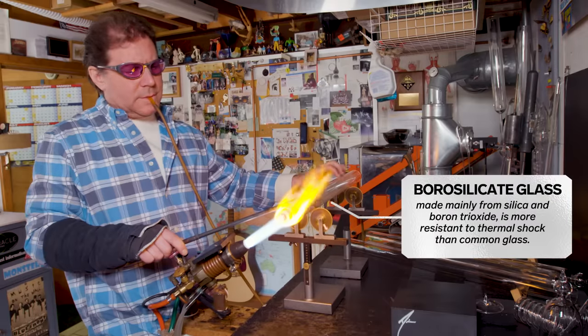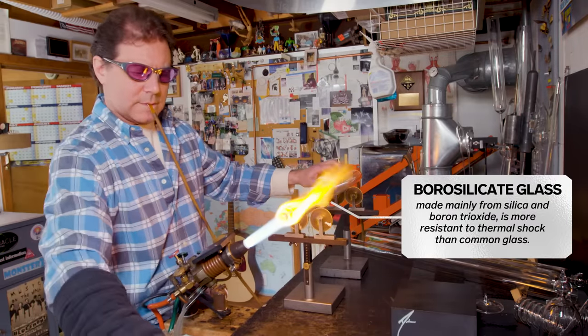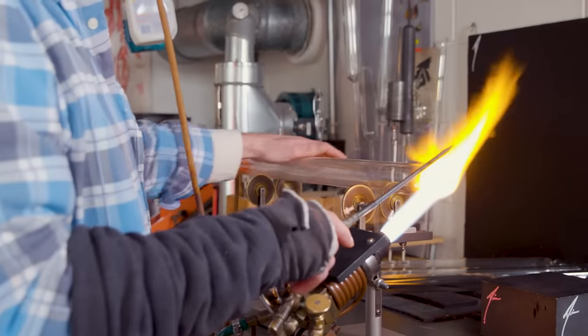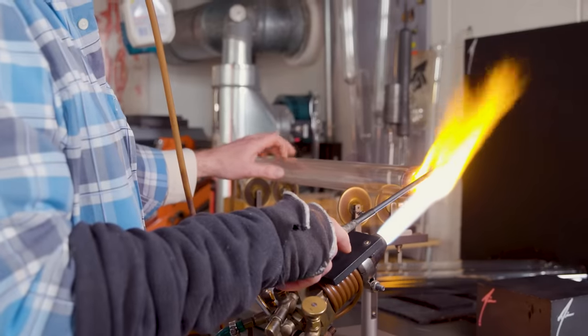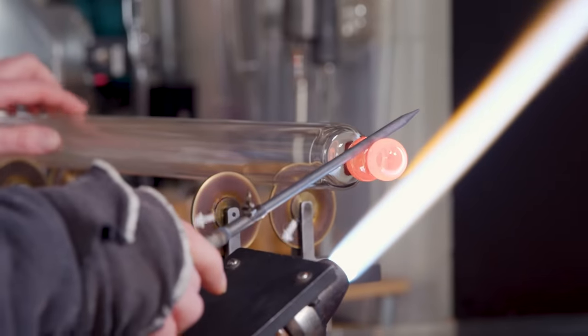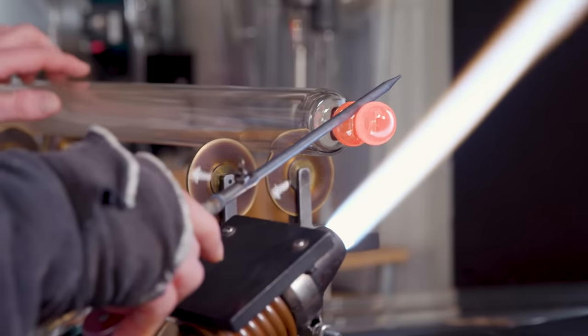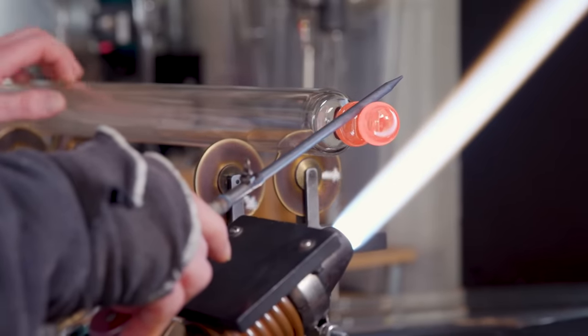Borosilicate tubing is soda lime glass with boron added to it. It makes it a stronger, harder glass. In flame working, we work with a torch, so it needs to be able to go from room temperature into a 3,000 degree flame and other glasses can't do that. That's why flame working is different than furnace working.